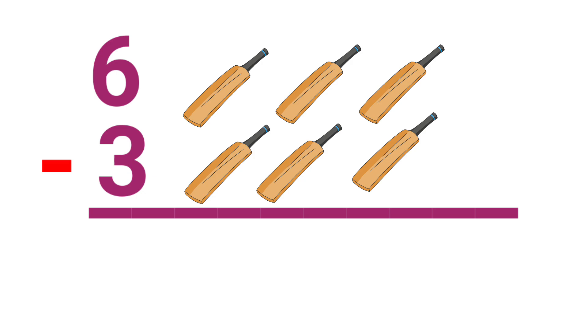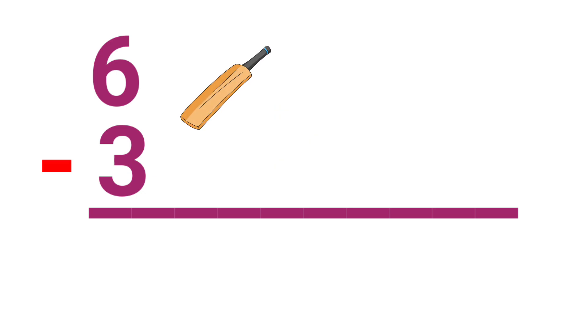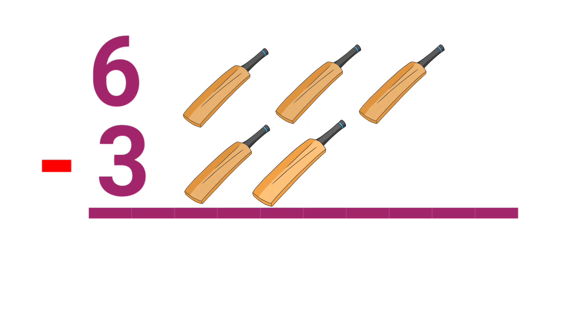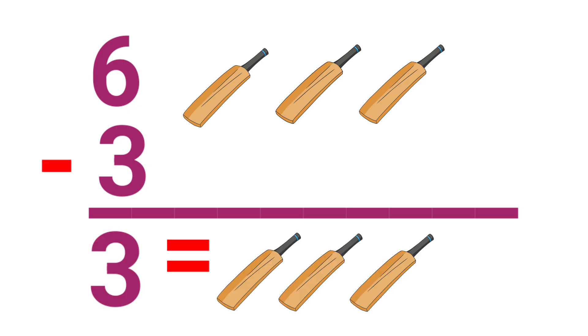Here the sum is 6 minus 3. We have to find the difference. Here 6 bats. 1, 2, 3, 4, 5, 6. There are 6 bats. In this 6 bats, 3 bats are broken. So remaining bats are 3. So the answer is 3. 6 minus 3 is 3.